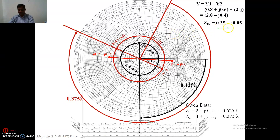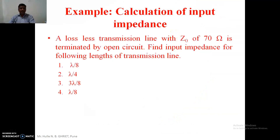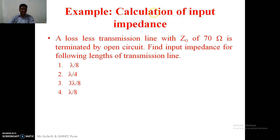I will go for another example. Sometimes we have complications in simple assignments. In this example, a lossless transmission line having characteristic impedance of 70 ohm is terminated by an open circuit. Sometimes lines are terminated by open circuit or short circuit. For different lengths of the transmission line — λ/8, λ/4, 3λ/8, and λ/2 — we are planning to calculate the input impedance.